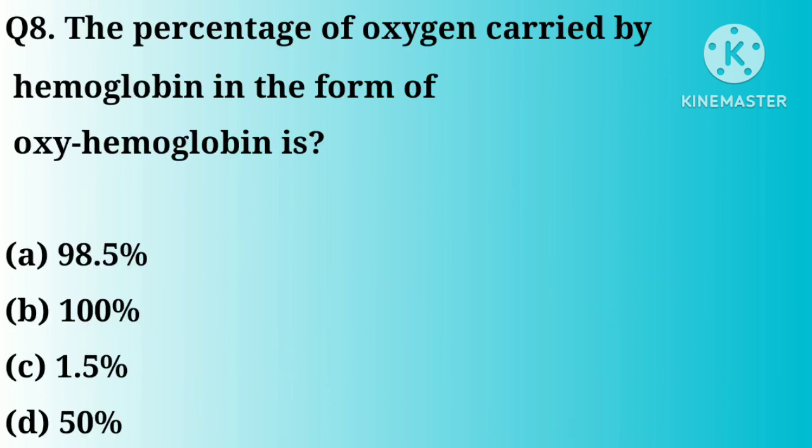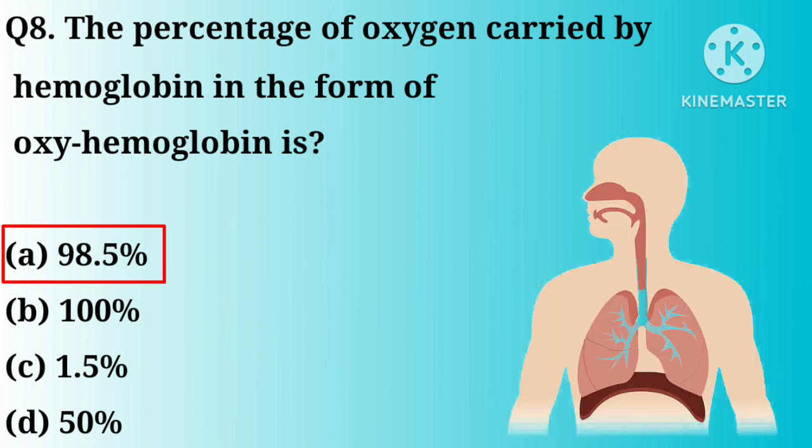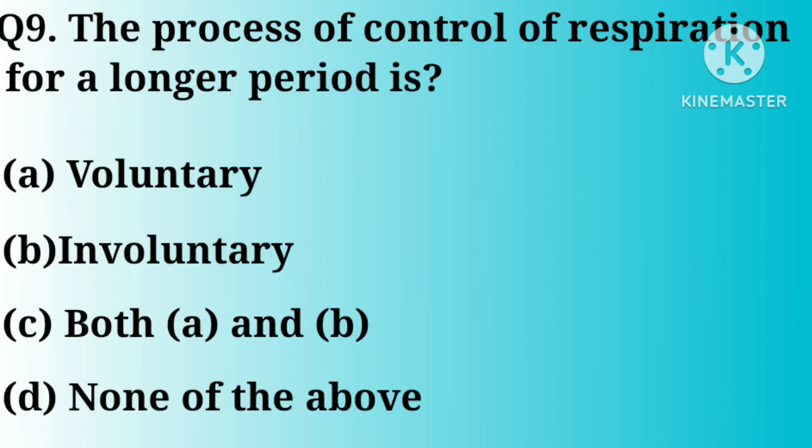Question number 8. The percentage of oxygen carried by hemoglobin in the form of oxyhemoglobin is: Option A. 95%. B. 100%. C. 1.5%. D. 50%. Correct answer: Option A.